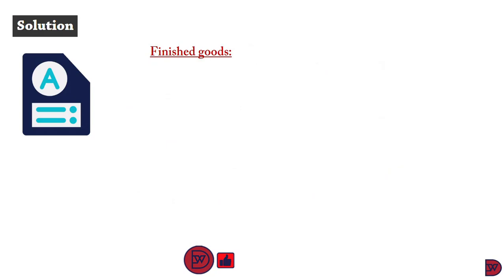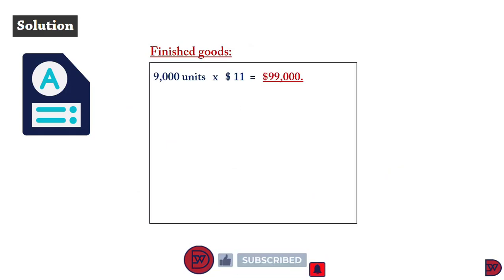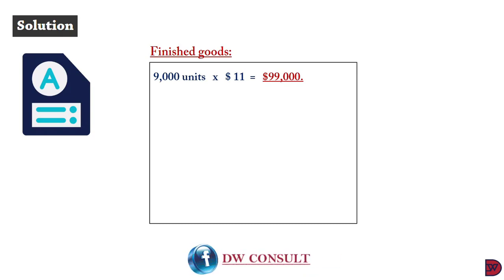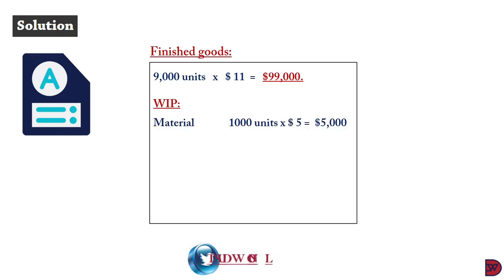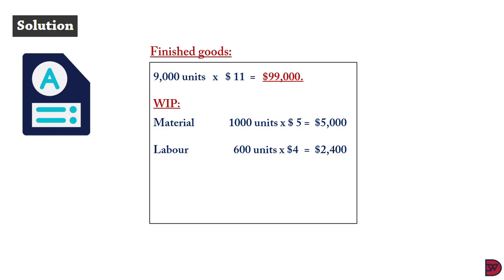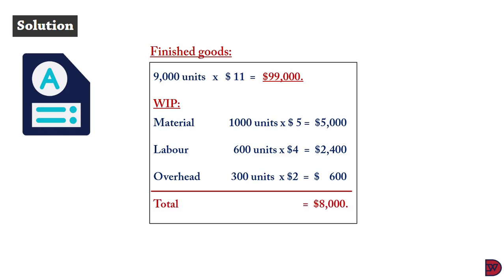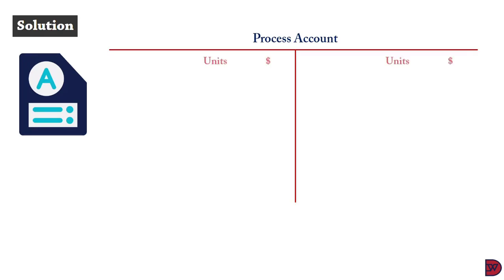For the finished goods: 9,000 units fully completed at $11 per unit gives $99,000. For the work in progress, costing is done individually — material: 1,000 units at $5 = $5,000; labor: 600 equivalent units at $4 = $2,400; overheads: 300 equivalent units at $2 = $600. The total work in progress value is $8,000.